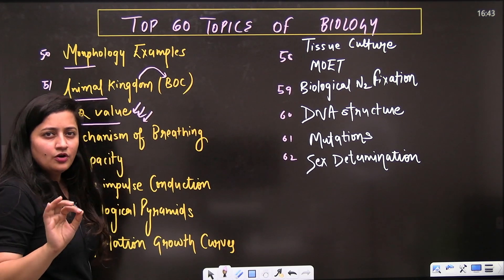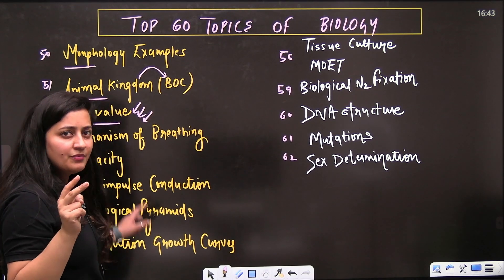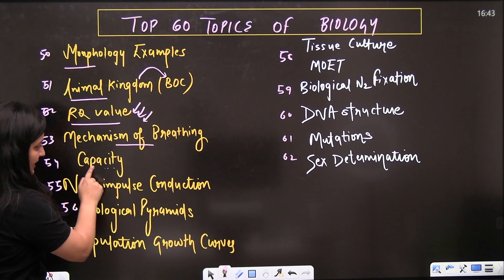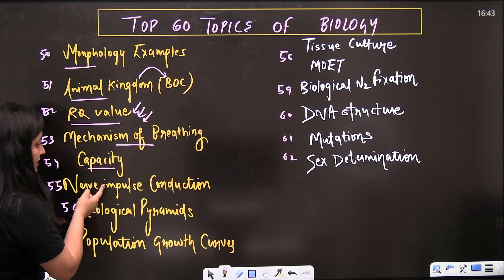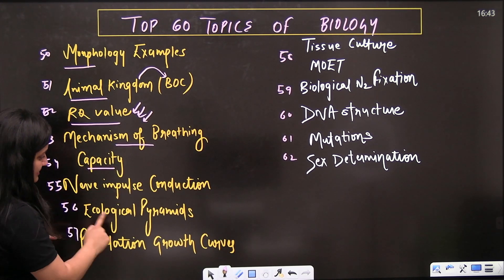RQ value is a very easy topic - you just need to devote two to three minutes to understand this. Then comes the mechanism of breathing, the capacity from the same chapter, nerve impulse conduction we have already discussed.